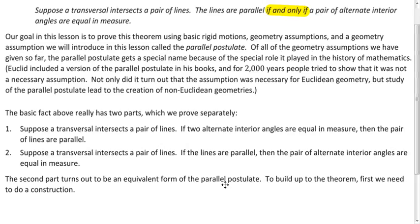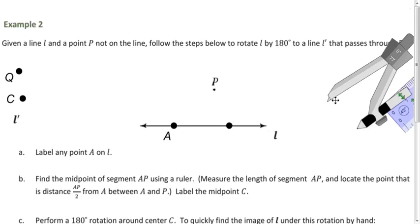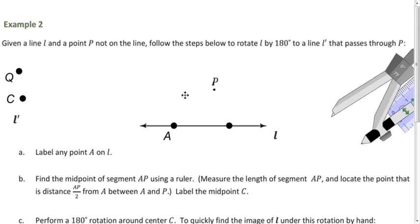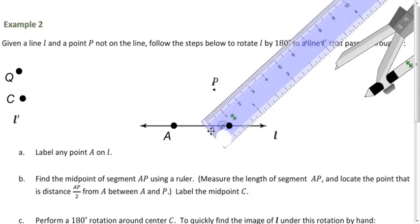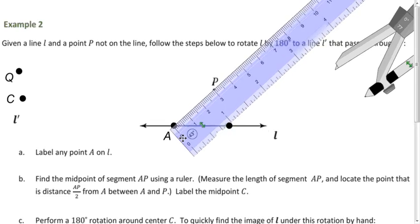To start off, we want to construct a line that goes through point P, and our goal is to make it parallel to line L. To do that, we perform a rotation. Pick any point on your line and call it A. Now we find the midpoint of segment AP using a ruler — it measures three centimeters, so we place the midpoint at 1.5 centimeters and call it C.